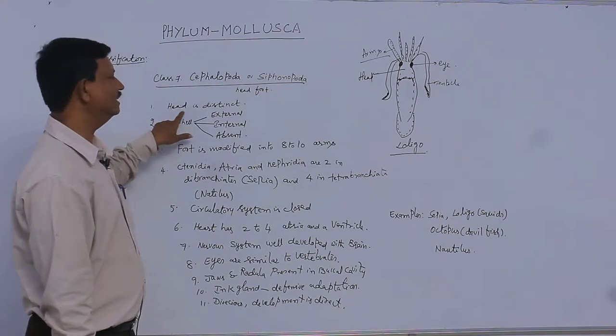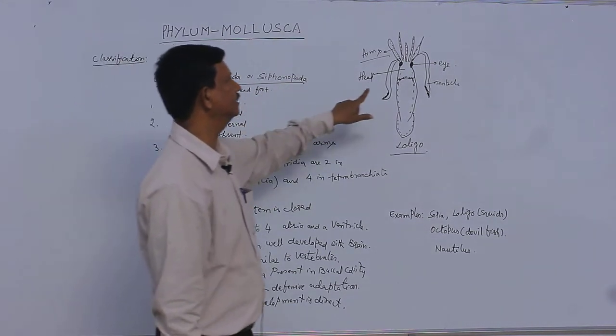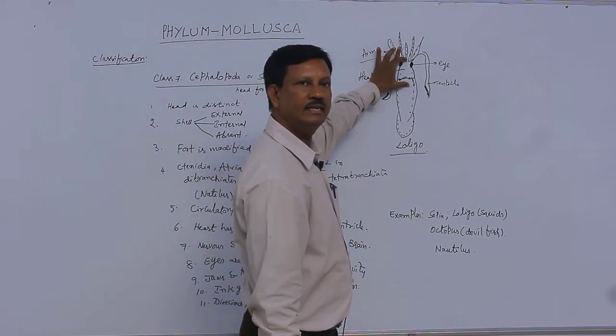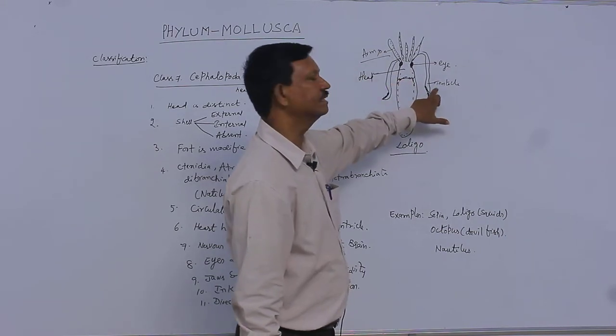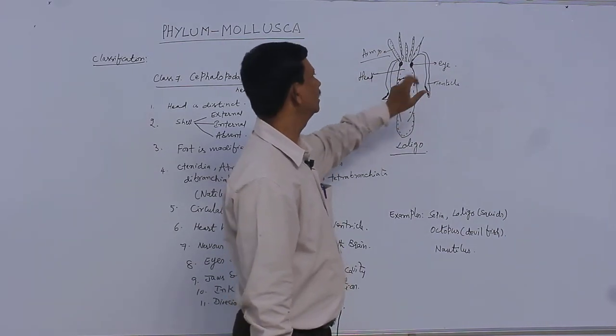There is a distinct head present. Here you can see a distinct head region of the body. It consists of eyes, arms, and tentacles present around the head region. That is why a distinct head is present here.